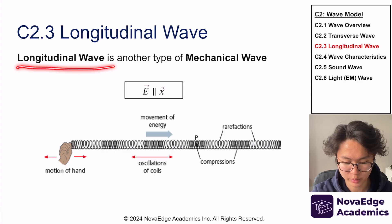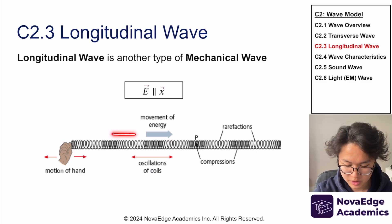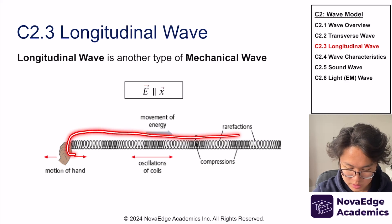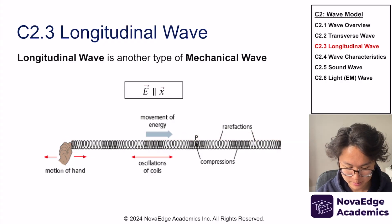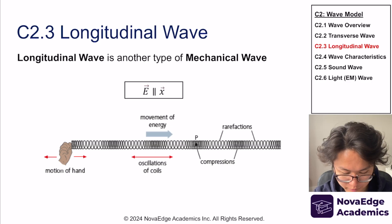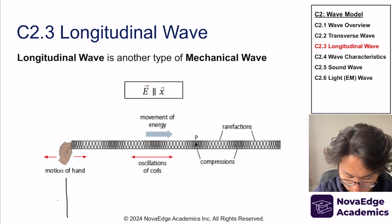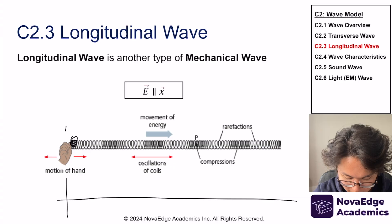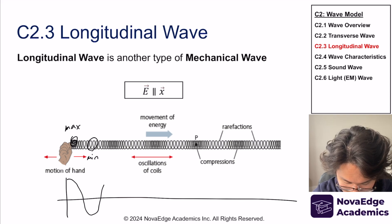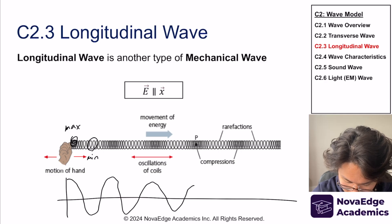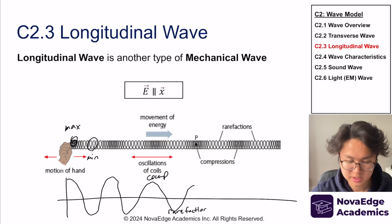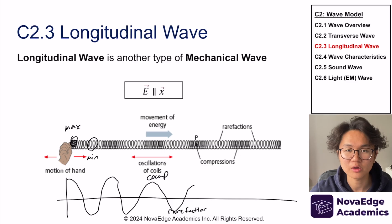A second type is a longitudinal wave. In a longitudinal wave, the displacement is parallel to energy propagation — not perpendicular. A perfect example is a coil: if I compress the coil and let go, you get a series of compressed and non-compressed regions creating a wave-like phenomenon. The compressed region is called a compression, and the non-compressed region is called a rarefaction. Another perfect example of a longitudinal wave is a sound wave.